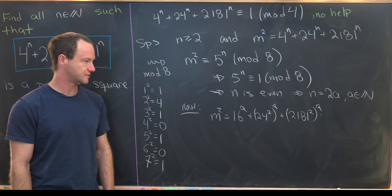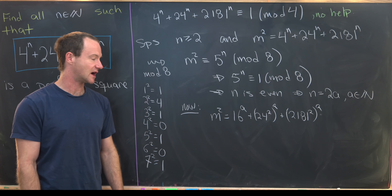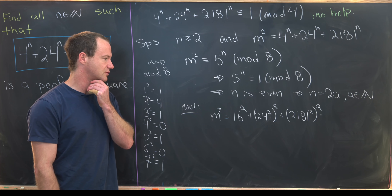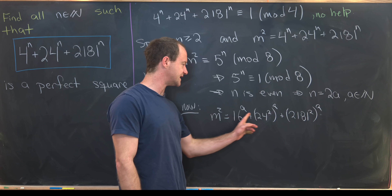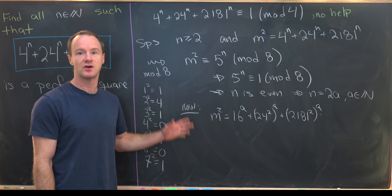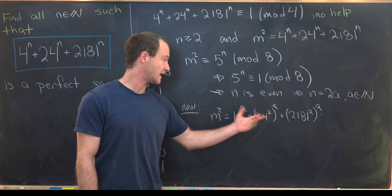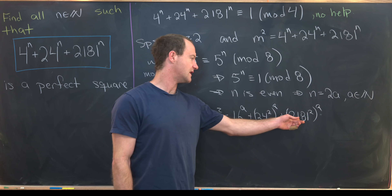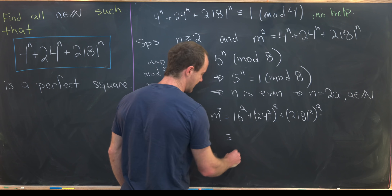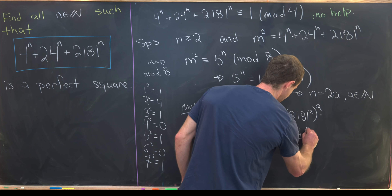Now we reduce this mod 5, hoping each term becomes 1. Indeed: 16 ≡ 1 mod 5, 24 ≡ −1 so 24² ≡ 1 mod 5, and 2181 ≡ 1 mod 5 so 2181² ≡ 1 mod 5. So m² ≡ 1 + 1 + 1 = 3 mod 5.